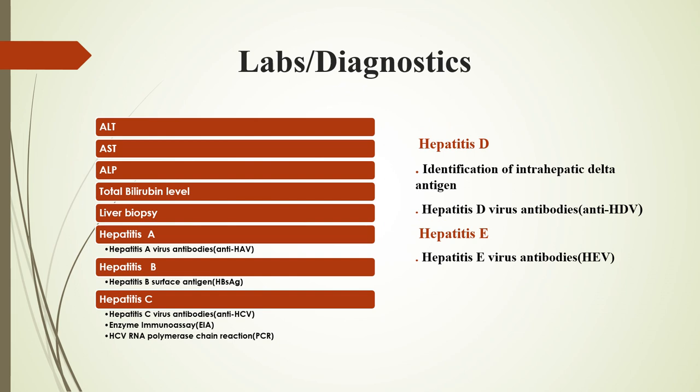For labs and diagnostics, ALT will be increased, AST will be increased, ALP will be increased, and total bilirubin level will also be increased. For biopsy and diagnosis: hepatitis A — virus antibody; hepatitis B — surface antigen; hepatitis C — antibodies, enzymes, immunoassay, and HCV RNA polymerase chain reaction; hepatitis D — identification of intra-hepatic antigen and hepatitis D virus antibodies; hepatitis E — hepatitis E virus antibodies.